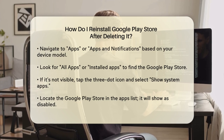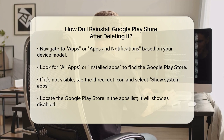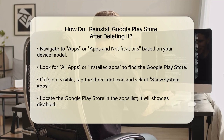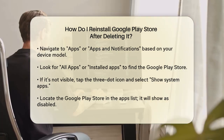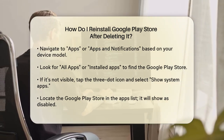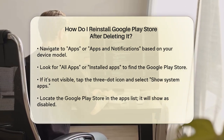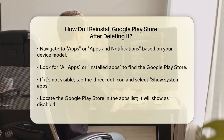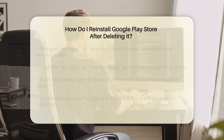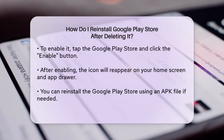When you locate the Google Play Store, you'll see that it's disabled. To enable it, simply tap on the Google Play Store and then click the Enable button. This button is usually located at the bottom left or right corner of your screen, depending on your phone's layout.